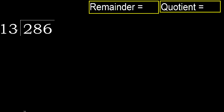286 divided by 13: 2 is less than 13, therefore next digit — 28 is not less than 13, therefore work with 28. 13 multiplied by which number is nearest to 28?